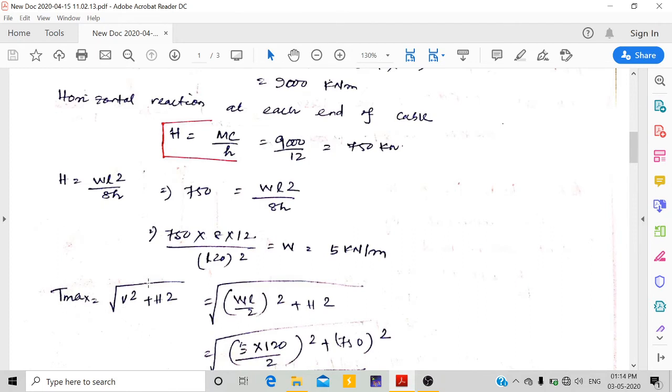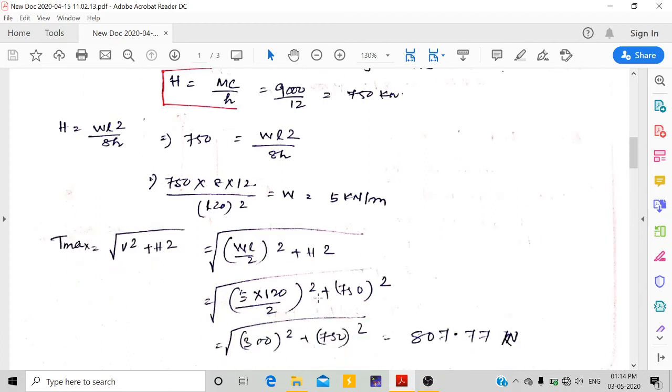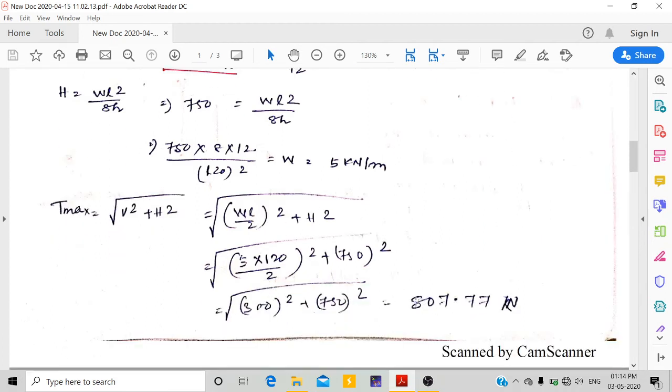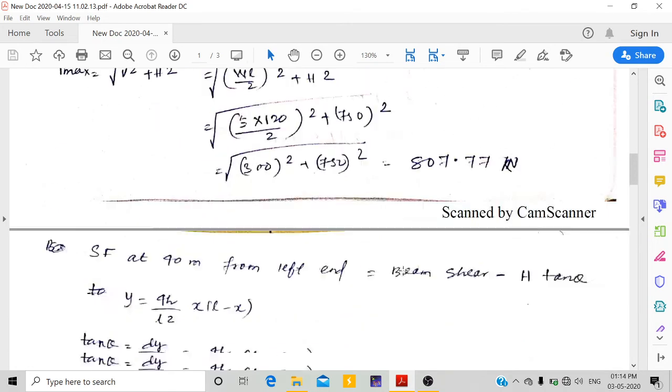For T_max, we calculate V equals w·L/2, then T_max equals the square root of V² plus H². So T_max is 807.77 kN.